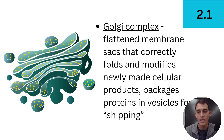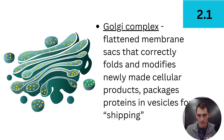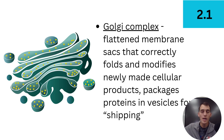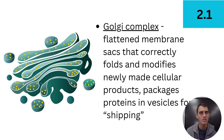Another structure in the endomembrane system is the Golgi complex, also called the Golgi body, Golgi apparatus, or just the Golgi. It's a system of flattened membrane sacs that correctly folds and modifies newly made cellular products. Whatever proteins or lipids the rough ER makes, it usually sends them first to the Golgi complex. The Golgi then packages them, folds the proteins correctly, and sends them out in the right direction — to another cell or another part of the cell. It's essentially the shipping center of the cell.